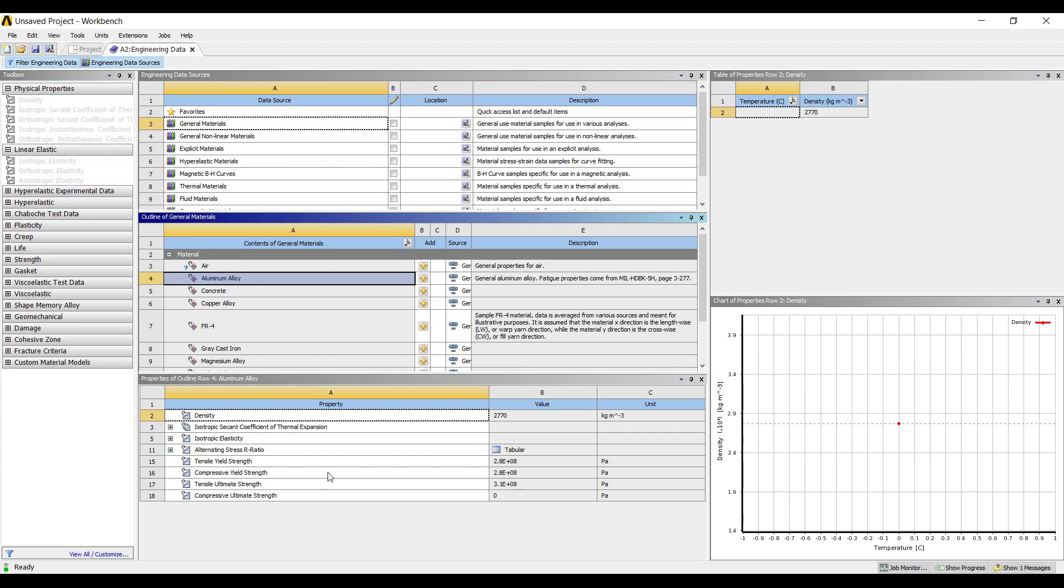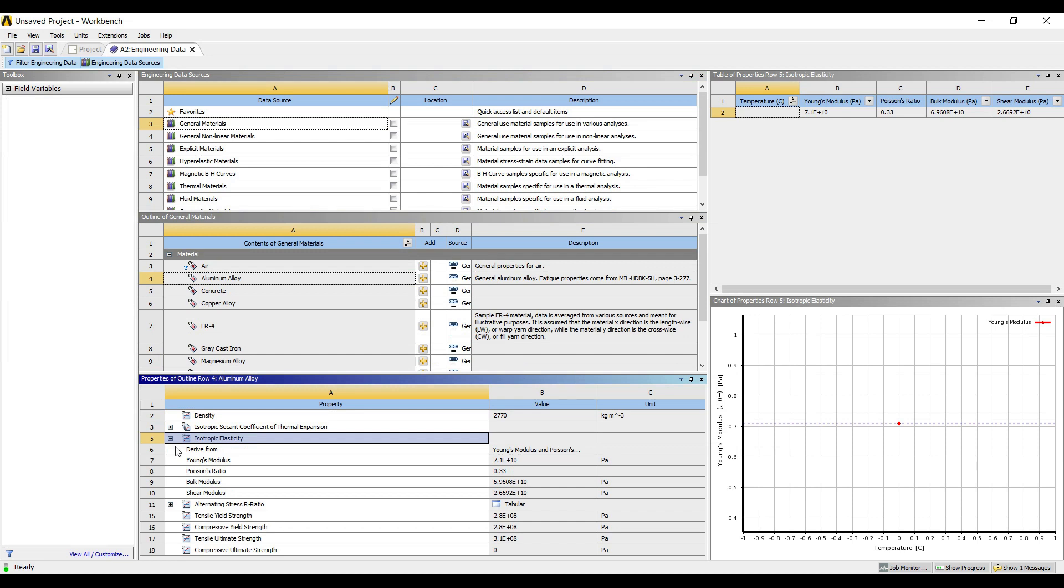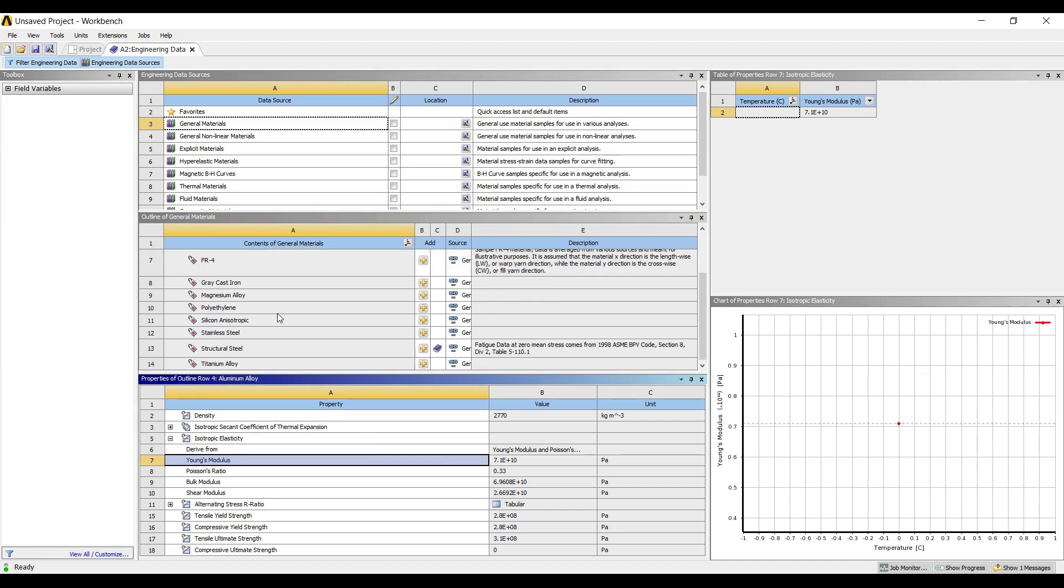If you check its isotropic elasticity, Young's modulus, the value is 7.1 into 10 raise to 10. I want 70 gigapascal, so it's just close. Brass does not exist here.